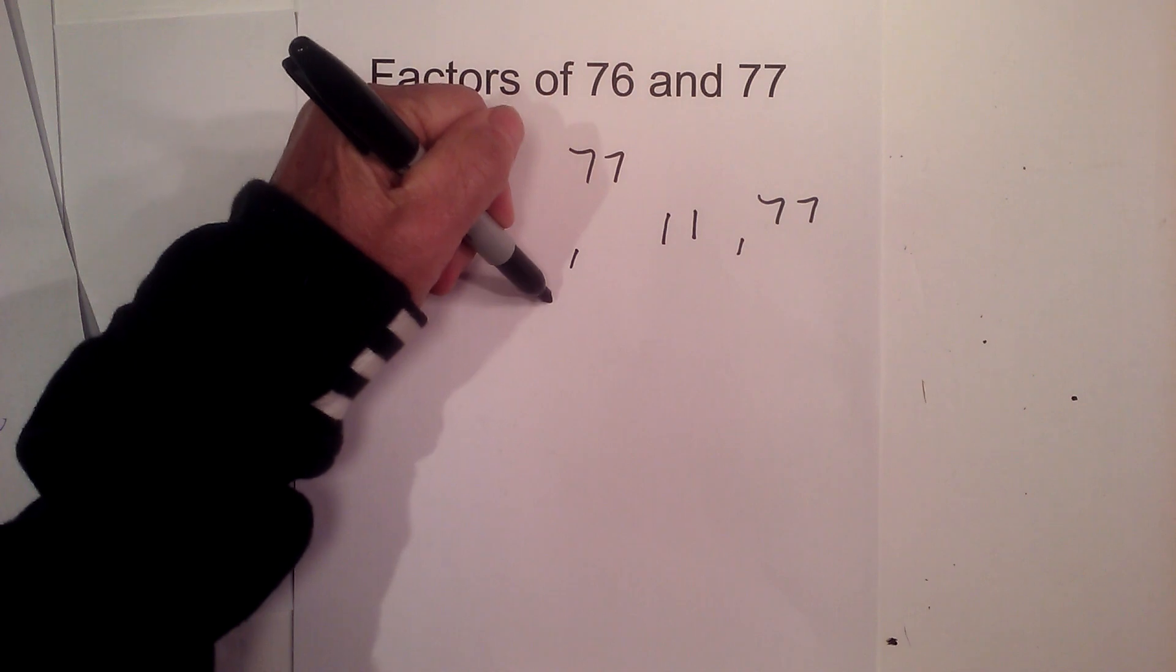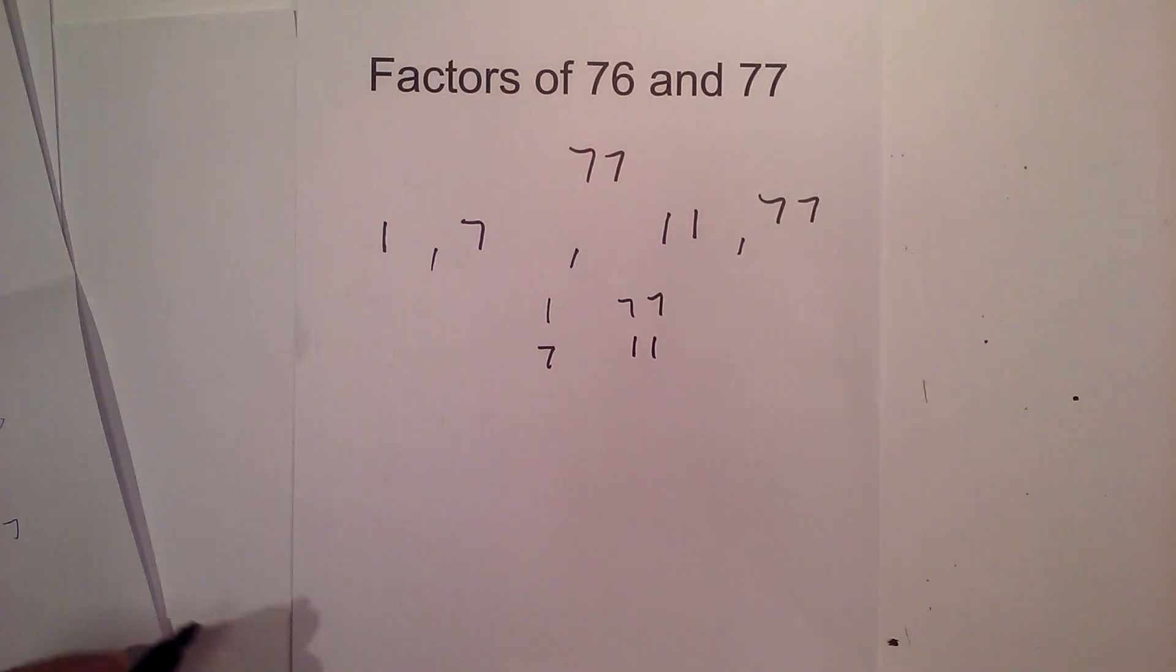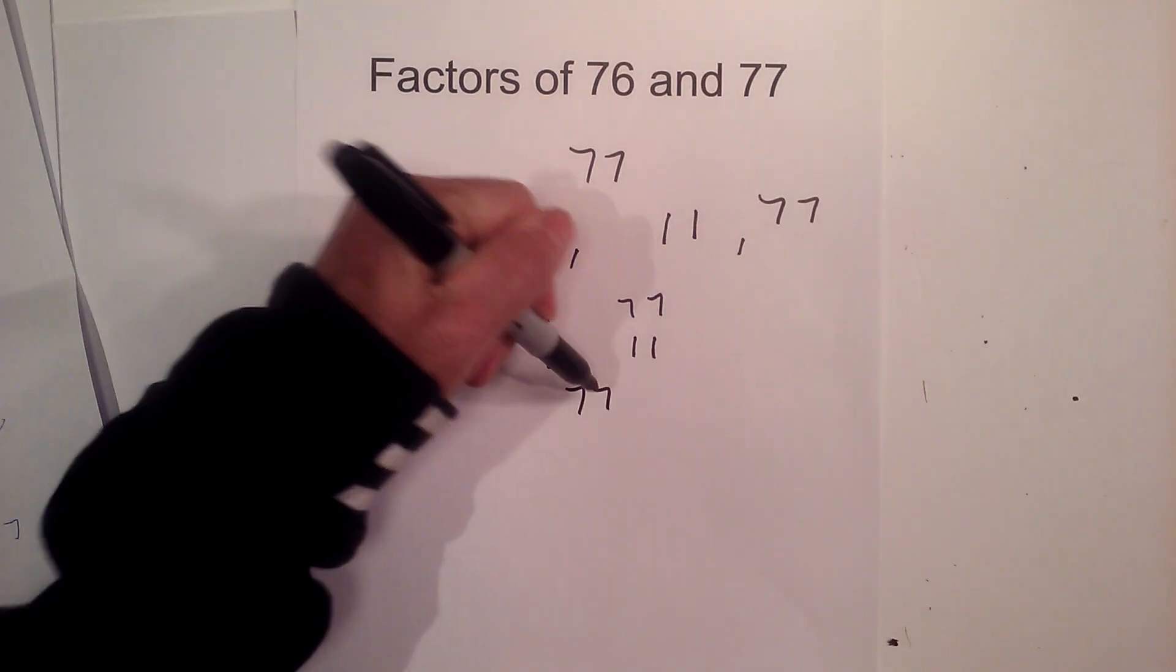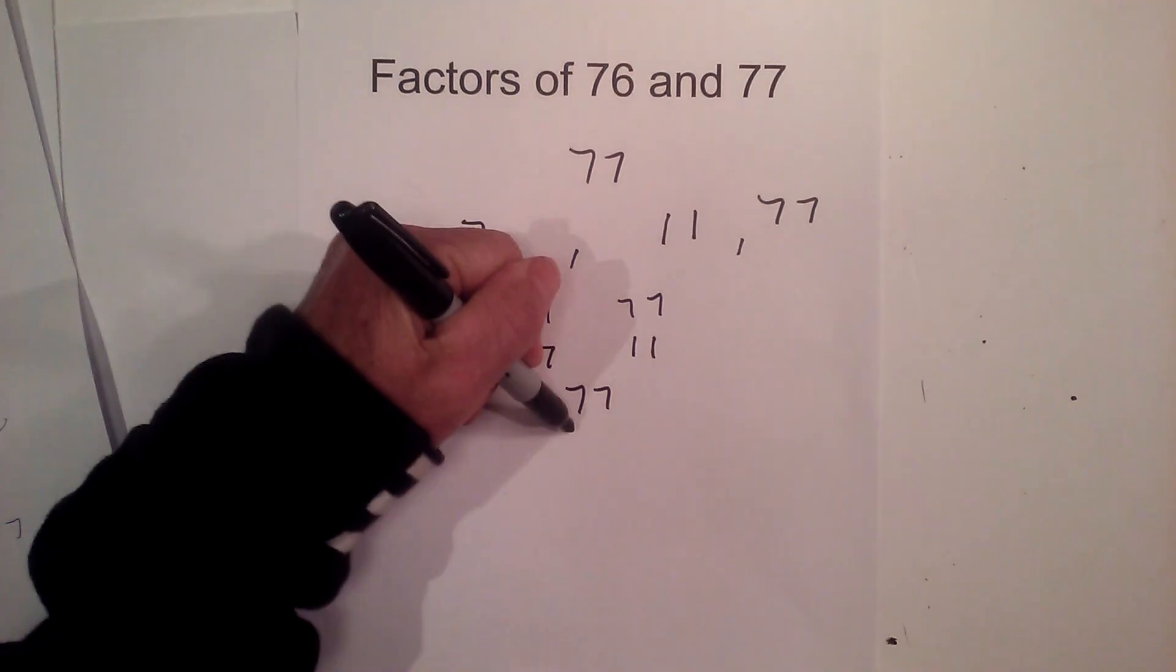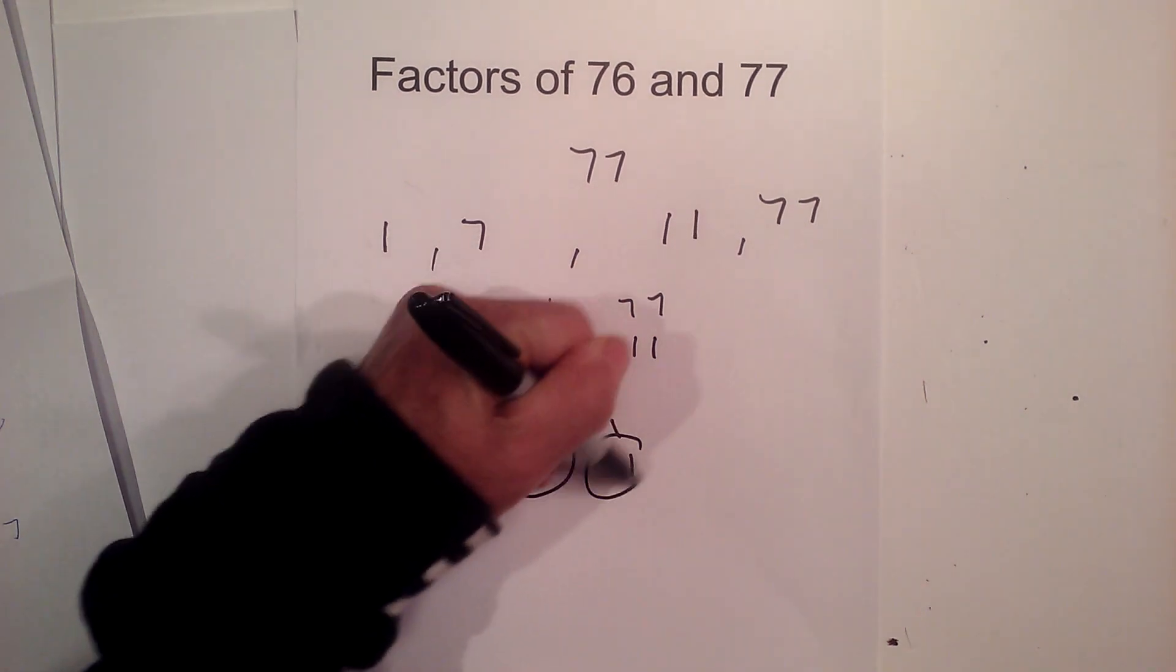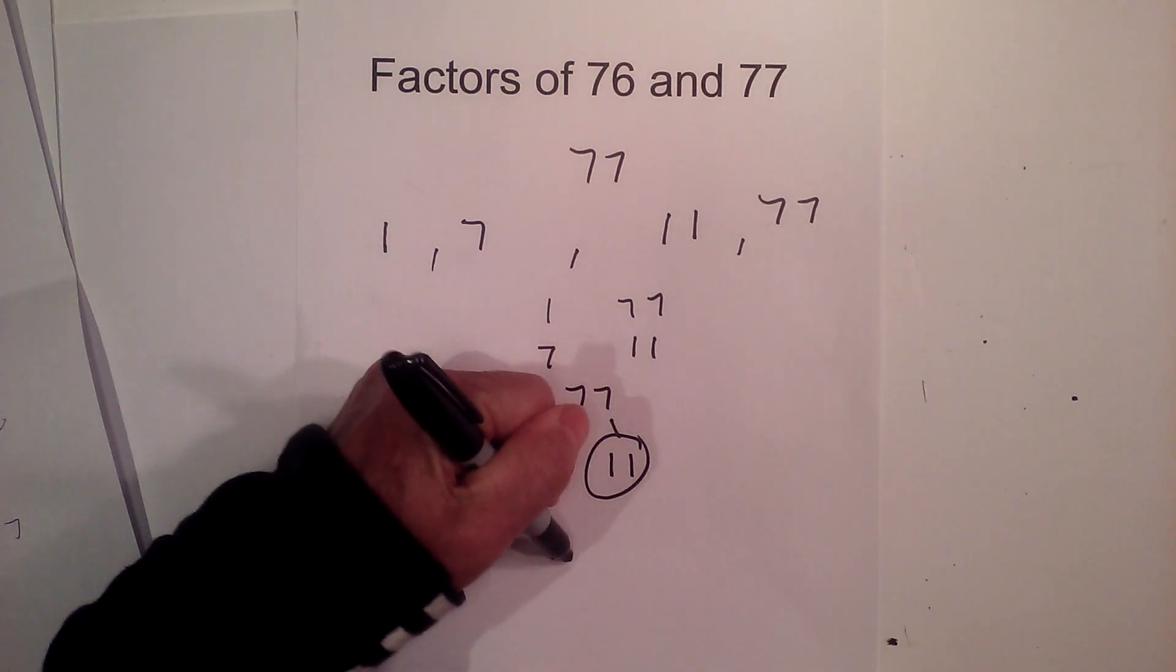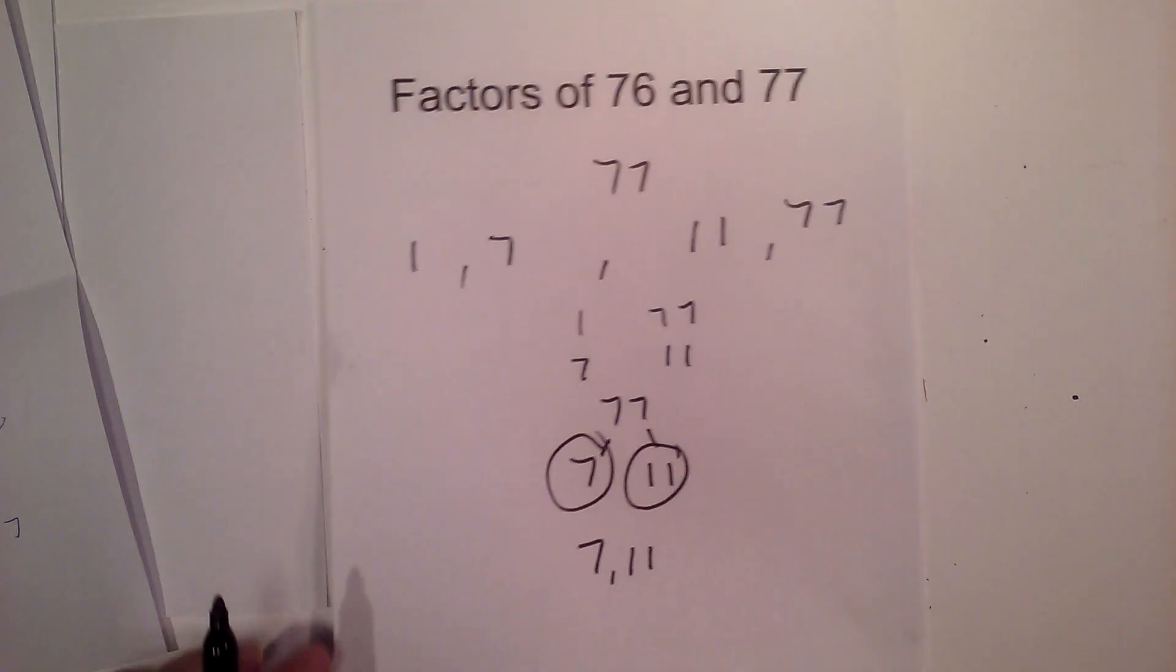If you'd like pairs, it's 1 times 77, and 7 times 11. Now, to complete a factor tree, you just have 7 times 11 circled. Both of them because they are prime. So the prime numbers of 77 are 7 and 11.